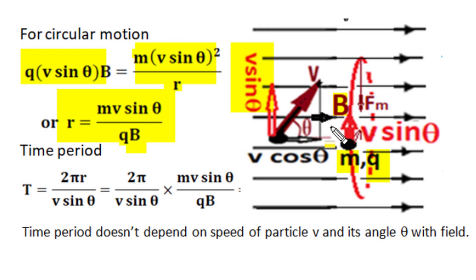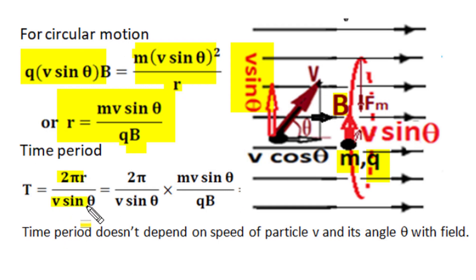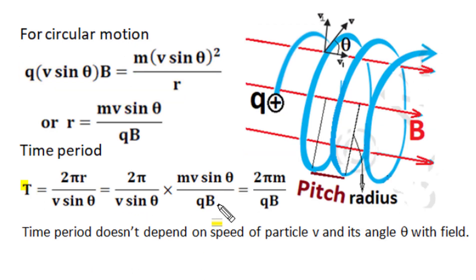We can also find the time period for one circular rotation. Time period equals the circular path periphery 2πr divided by the velocity performing circular motion, v sin theta. Substituting r = mv sin theta / qB, the v sin theta terms in numerator and denominator cancel out. Therefore, the time period of circular motion T = 2πm / qB, which does not depend upon velocity, energy, or even the angle theta — only on mass m, charge q, and magnetic field flux density B.